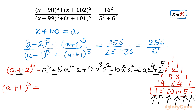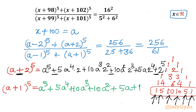Similarly, (a+1)^5 = a^5 + 5a^4 + 10a³ + 10a² + 5a + 1. For (a−1)^5 in the denominator, the alternate terms are negative. When we add (a−2)^5 + (a+2)^5 in the numerator and (a−1)^5 + (a+1)^5 in the denominator, the even-powered terms cancel, leaving in the denominator: a^5 + 10a³ + 5a.